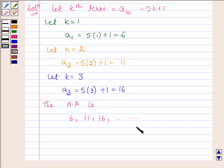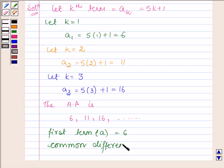From this AP we find that the first term is equal to 6 and the common difference is equal to 11 minus 6 which is equal to 5.